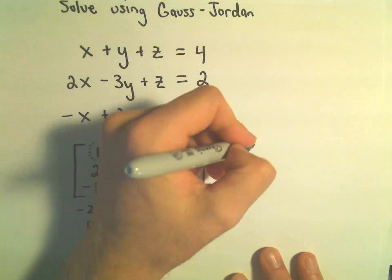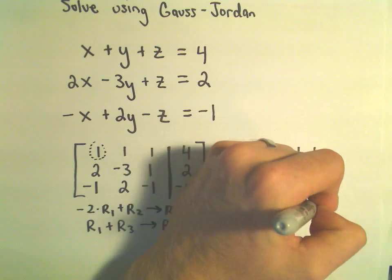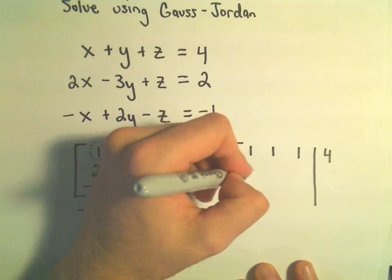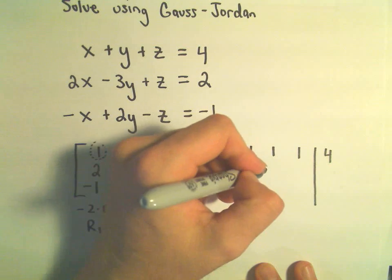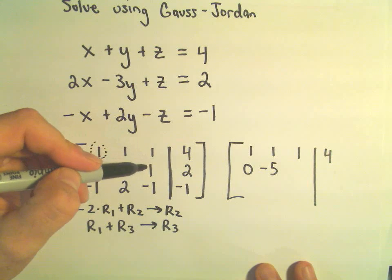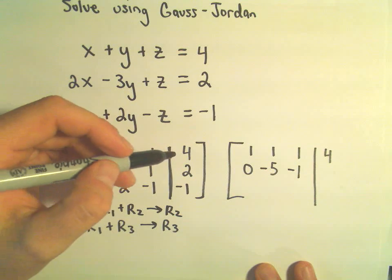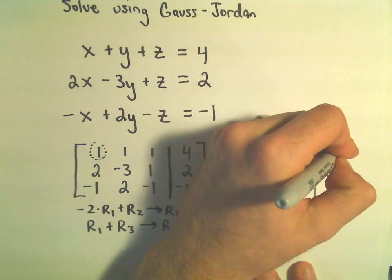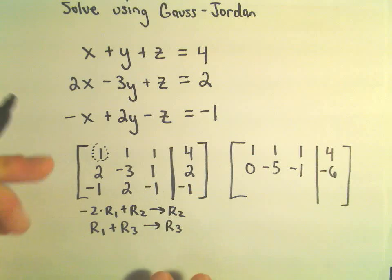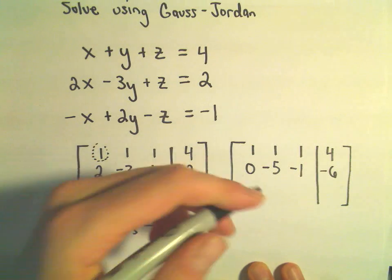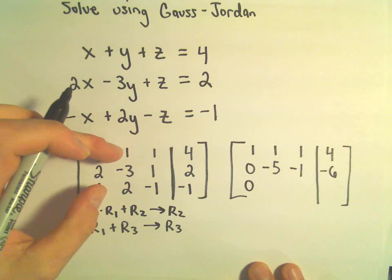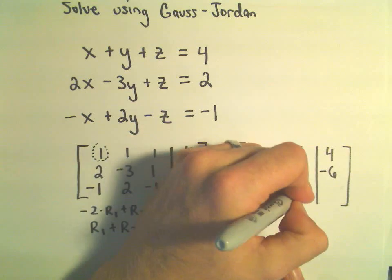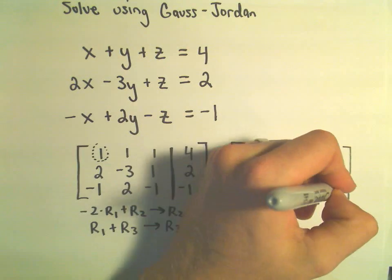The first row we're not changing, so we have 1, 1, 1, and 4. Taking negative 2 times row 1 plus row 2: negative 2 plus 2 is 0, negative 2 plus negative 3 is negative 5, negative 2 plus 1 is negative 1, and negative 8 plus 2 is negative 6. Adding row 1 and row 3: 1 plus negative 1 is 0, 1 plus 2 is 3, 1 plus negative 1 is 0, and 4 plus negative 1 is positive 3.